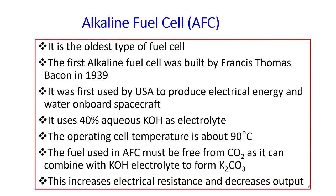Let us move to the alkaline fuel cell. It is the oldest type of fuel cell. The first alkaline fuel cell was built by Francis Thomas Bacon in 1939. It was first used by the USA to produce electrical energy and water onboard spacecraft. It uses about 40 percent aqueous KOH (potassium hydroxide) as electrolyte, and the cell operating temperature is about 90 degrees Celsius.